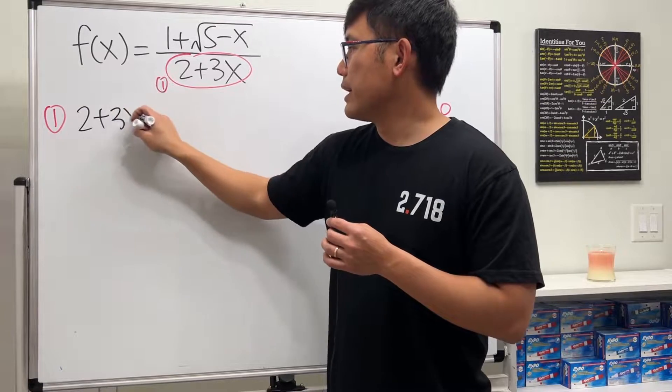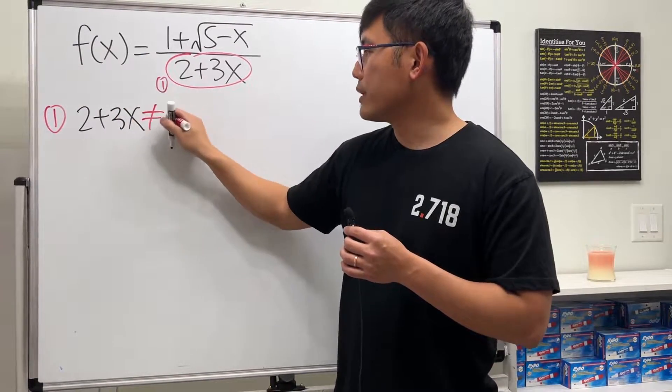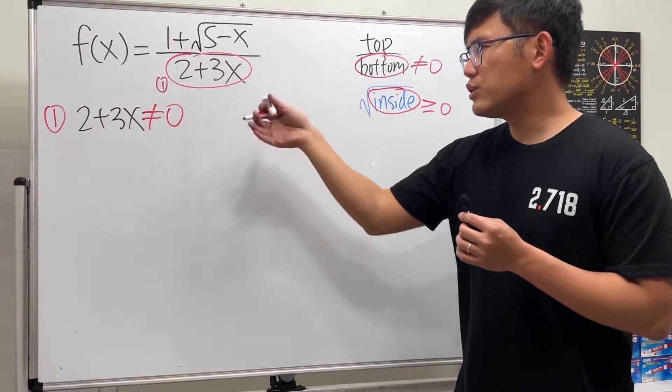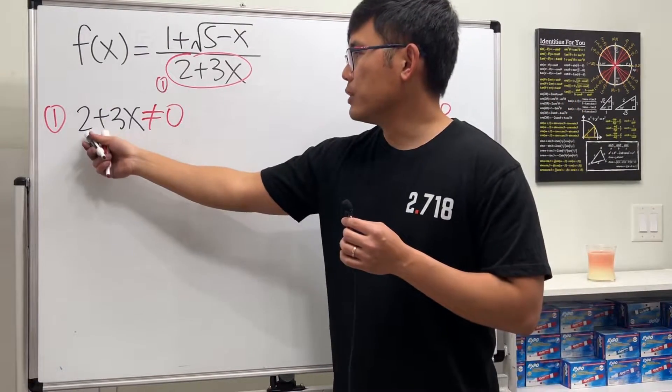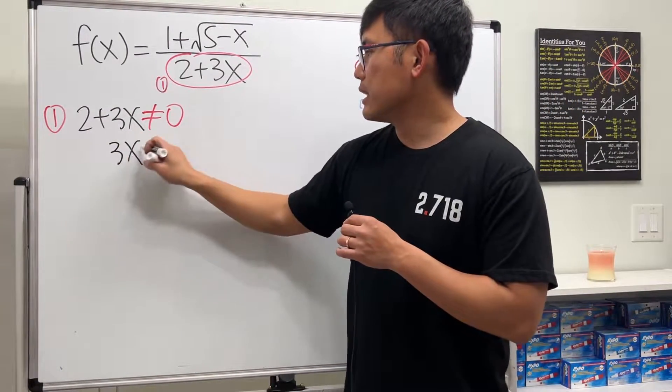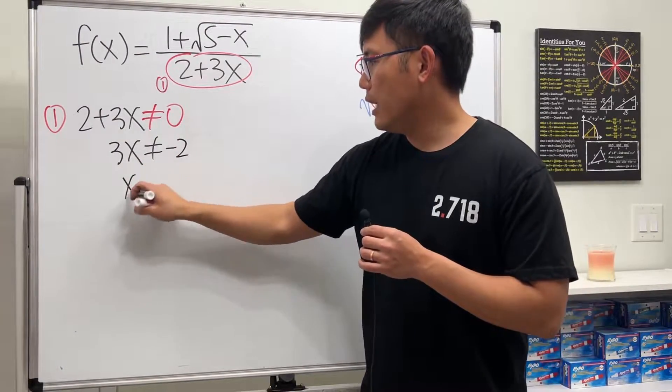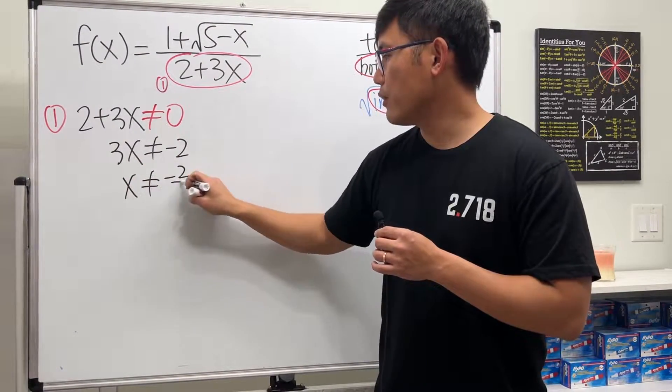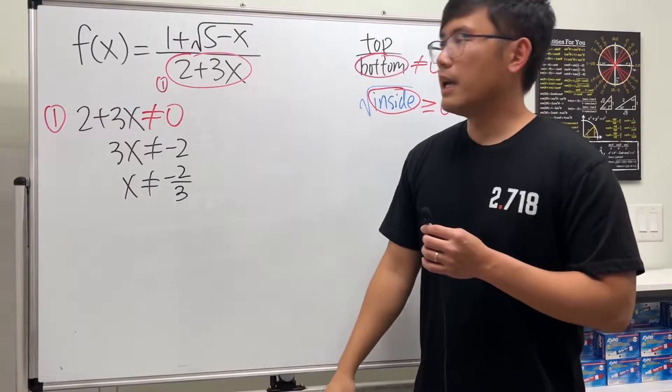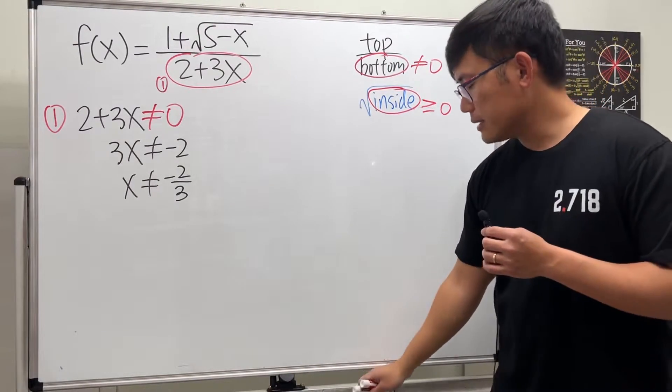2 plus 3x, we do not want it to be zero. Let's solve this right away. Put the 2 to the other side: 3x cannot be equal to negative 2. Divide both sides: x cannot be negative 2 over 3.